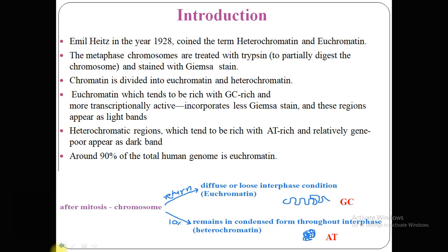In metaphase chromosomes which are treated with the trypsin enzyme, the chromosome is partially digested, as you can see in this diagram, and stained with the Giemsa stain. Chromatin is divided into two parts: the first part is euchromatin and the second one is heterochromatin.